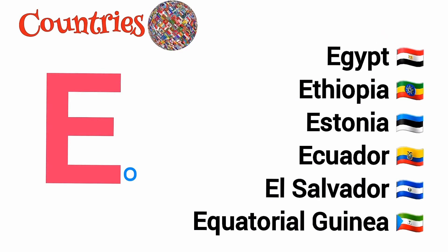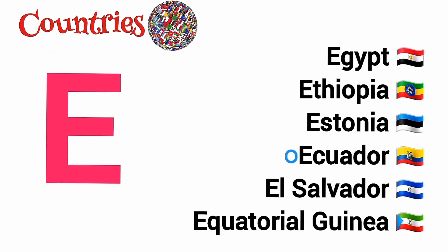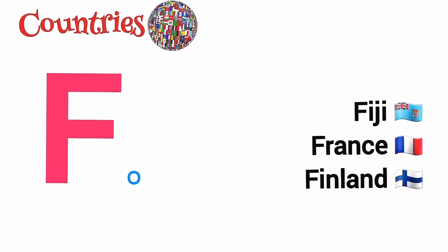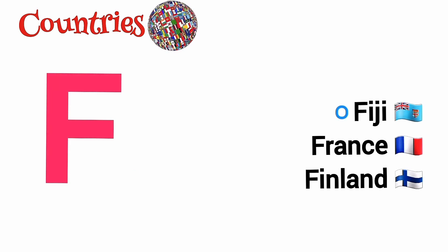E is for Egypt, Ethiopia, Estonia, Ecuador, El Salvador, Equatorial Guinea. F is for Fiji, France, Finland.